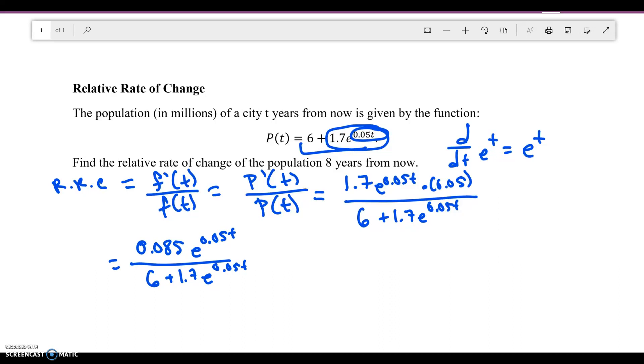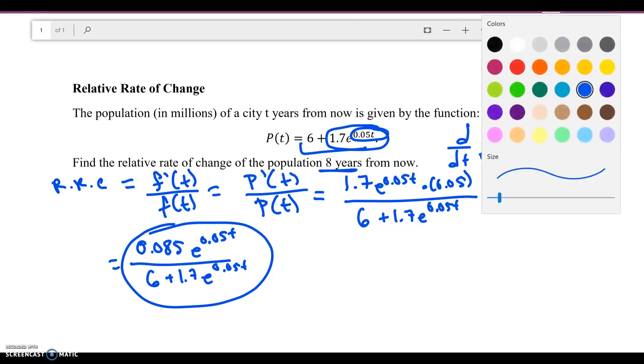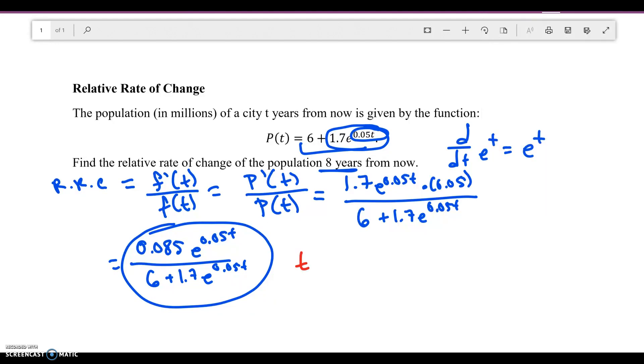Now what we're looking for is the relative rate of change, which is what we just found. What we want to do is now plug in 8. So we want to know what is the actual value at t equals 8. I'm just going to plug that in. It's going to be 0.085 e to the 0.05 times 8 divided by 6 plus 1.7 e to the 0.05 times 8.